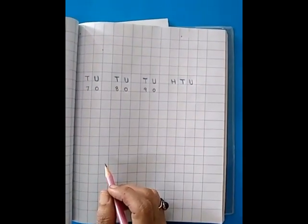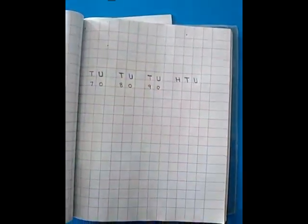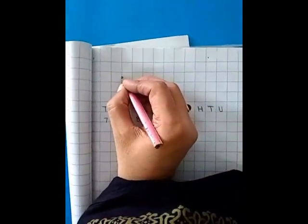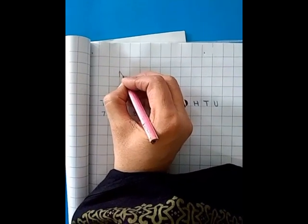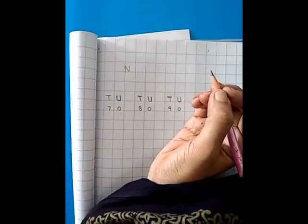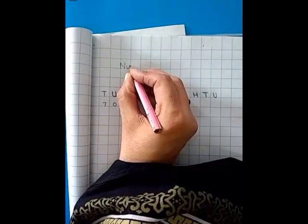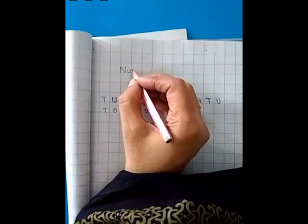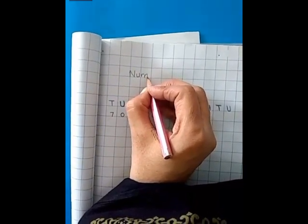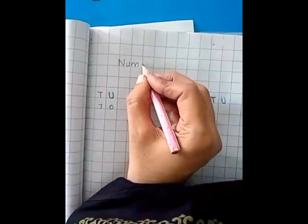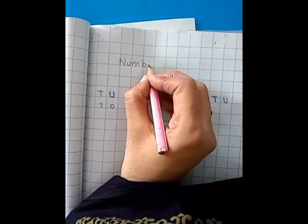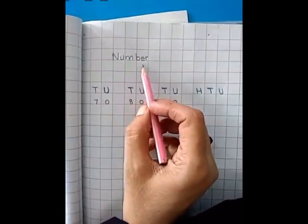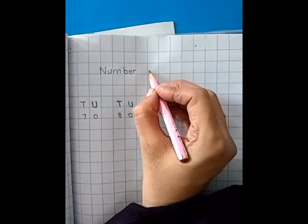Today we are going from 69 onwards. Here you have to write the date and caption. Hold your pencil. First make N just like me, then make U. N-U-M. When you write, just read. N-U-M. B-E-R. Number.